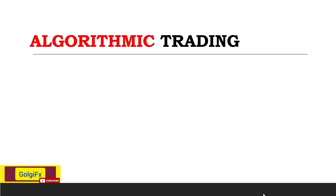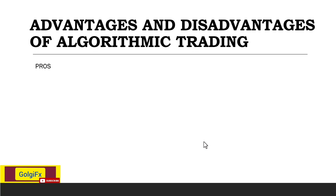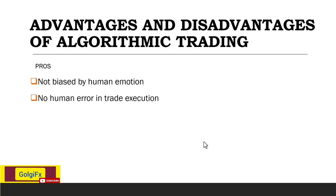Looking at the pros of algorithmic trading: first, it is not influenced by human emotion. Anytime a trader uses algo trading or robots, there is no human emotion playing a part since it is being controlled by coding rules, which makes algo trading one of the best ways of trading. There is also no human error in trade execution.